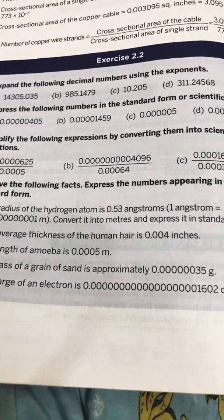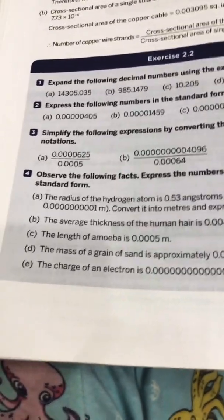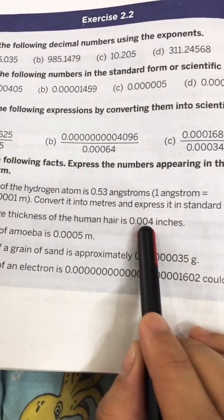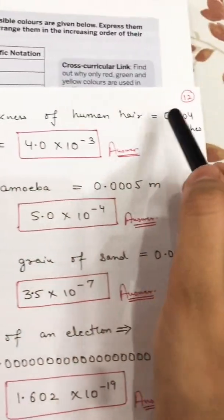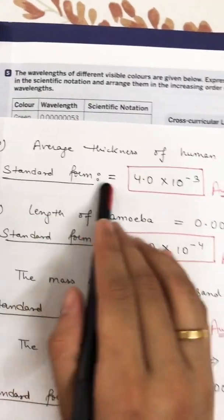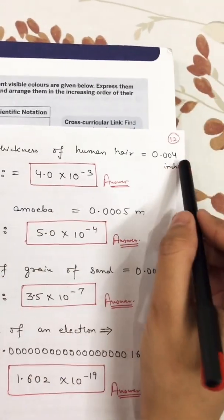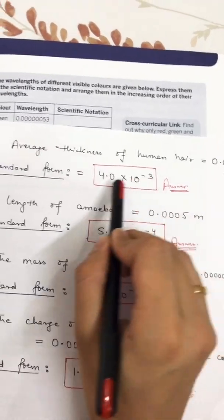In part a you had to convert first, then express in standard form. In all other parts you just write directly in standard form. Part b: the average thickness of human hair is 0.004 inches. Solution: shift the decimal after the first digit, after 4 — that is 4.0. How many digits have you shifted? One, two, three. So the answer is 4.0 × 10 raised to power minus 3.